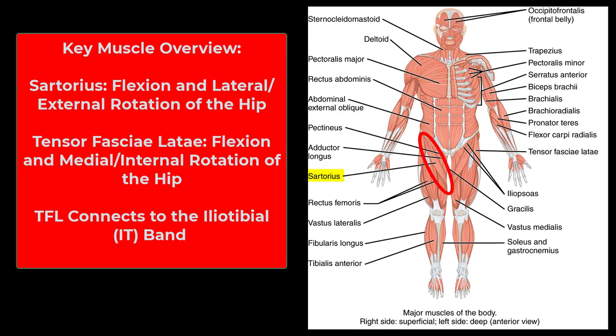Next is the tensor fasciae latae, or TFL in clinical practice. It's a small muscle with a very long, large tendon. Its function is flexion and medial or internal rotation of the hip. That long tendon fuses with the tendon of the gluteus maximus to form the IT band — the iliotibial band — which can cause lateral knee pain in runners if it gets tight.